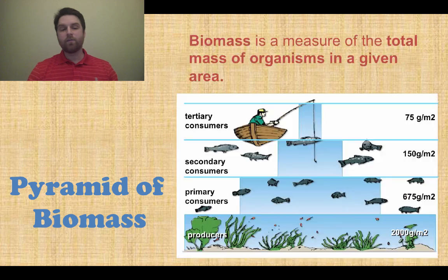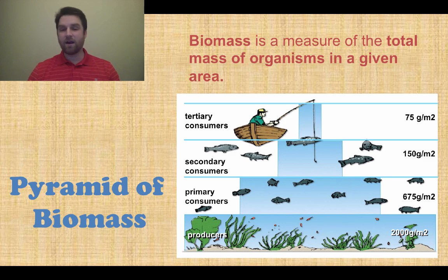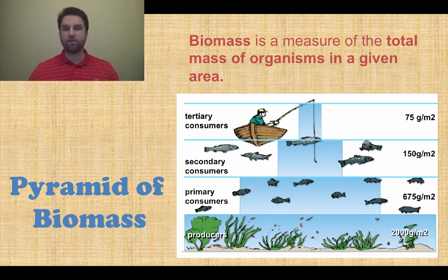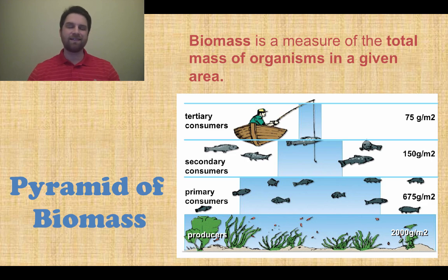Next we have the pyramid of biomass, which works much the same way. Biomass is a measure of the total mass of organisms in a given area. The producers at the bottom have the most mass on Earth — if you add their mass together it's very large — all the way up to tertiary consumers, which are very small in comparison. Producers have the most mass and tertiary consumers have the least.